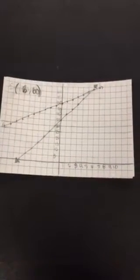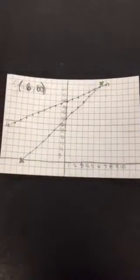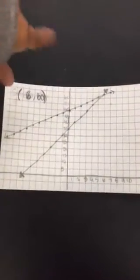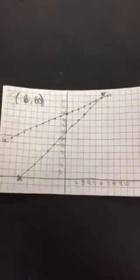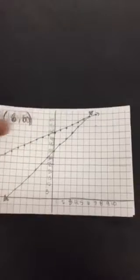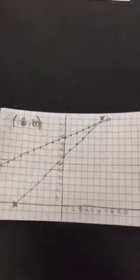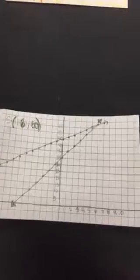We graphed the two equations from the last slide. We graphed them and we got them crossing, which was one solution. And the coordinates are 6 and 60.